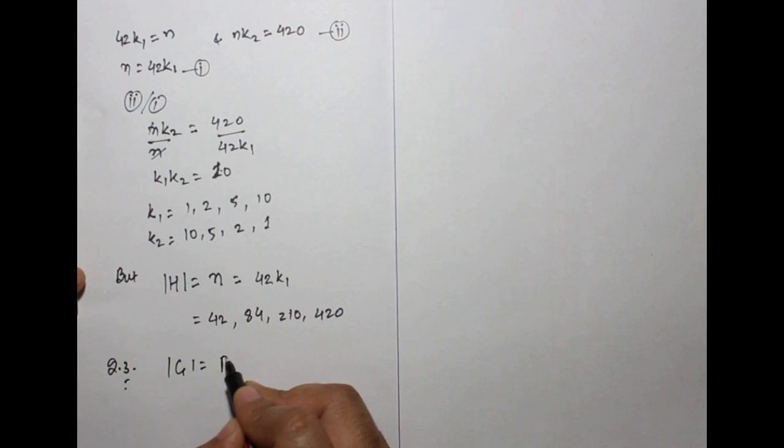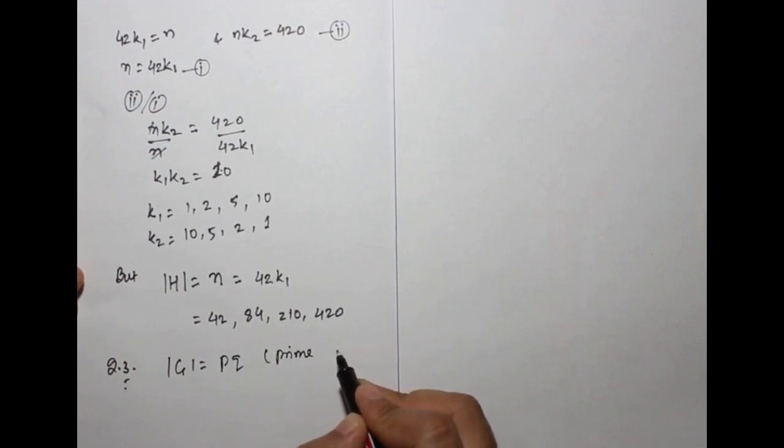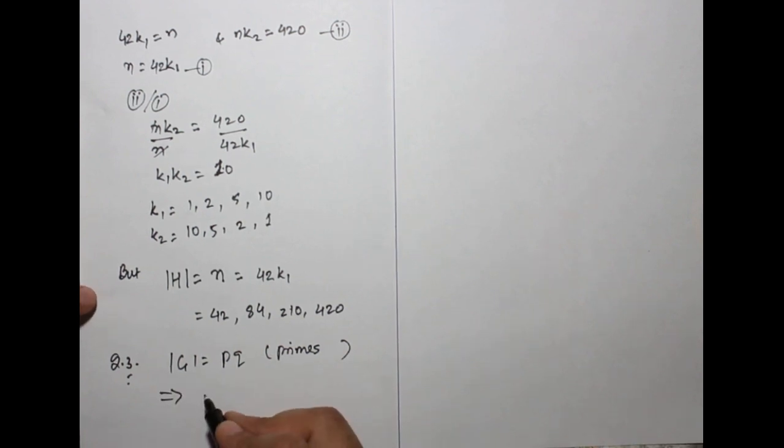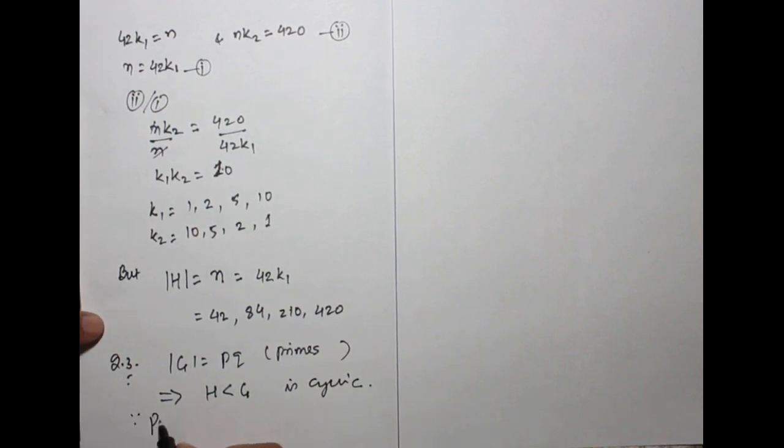Next problem: Order of G equals to p into q, where p and q are prime. It implies a proper subgroup of G is cyclic.